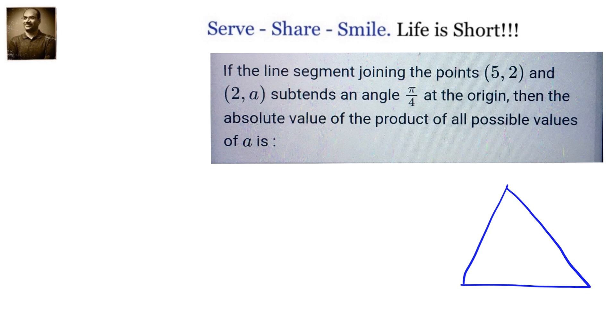that means we have been given a triangle in which (5,2), (2,a) form a side of the triangle and the opposite vertex is (0,0). The angle opposite to the side joining (5,2) and (2,a) at that vertex is π/4 or 45 degrees.